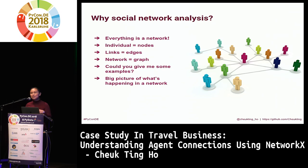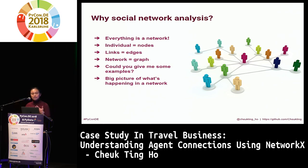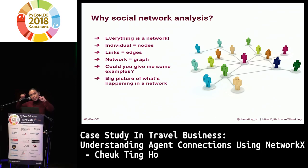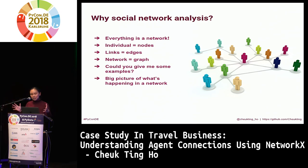A very typical example is Facebook — you add your friends there, so you connect to each other. All the people you know, everybody on Facebook, actually build a network. Each individual person is called a node. When we connect to each other, if we are friends, we build a link — we build an edge connecting two nodes. All these things combine together and form a network, a graph.